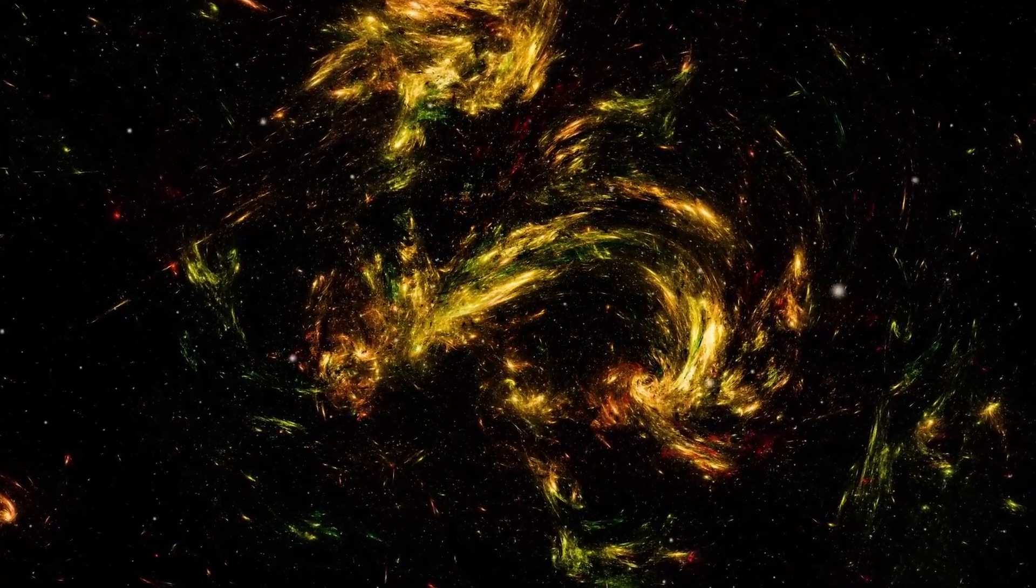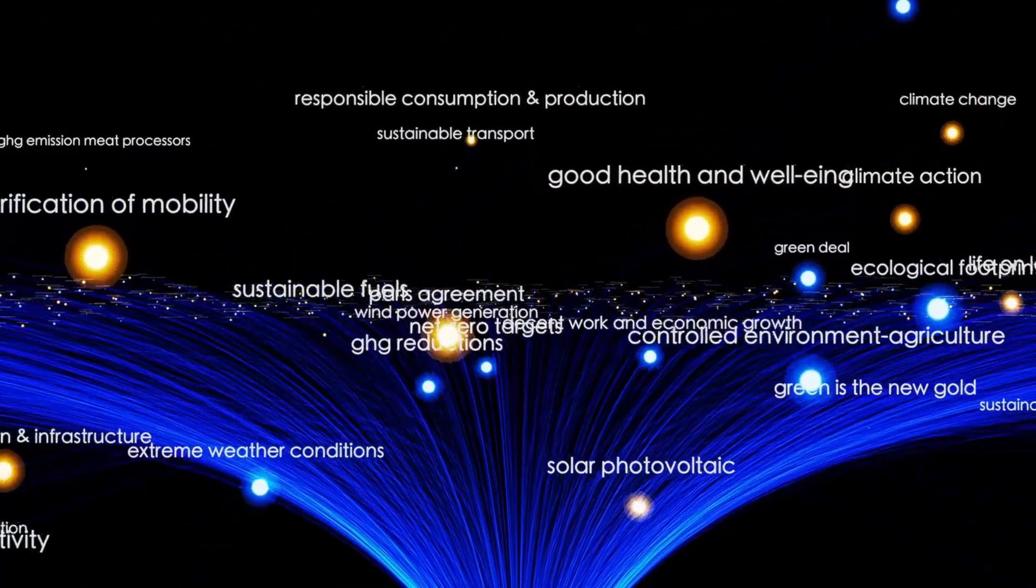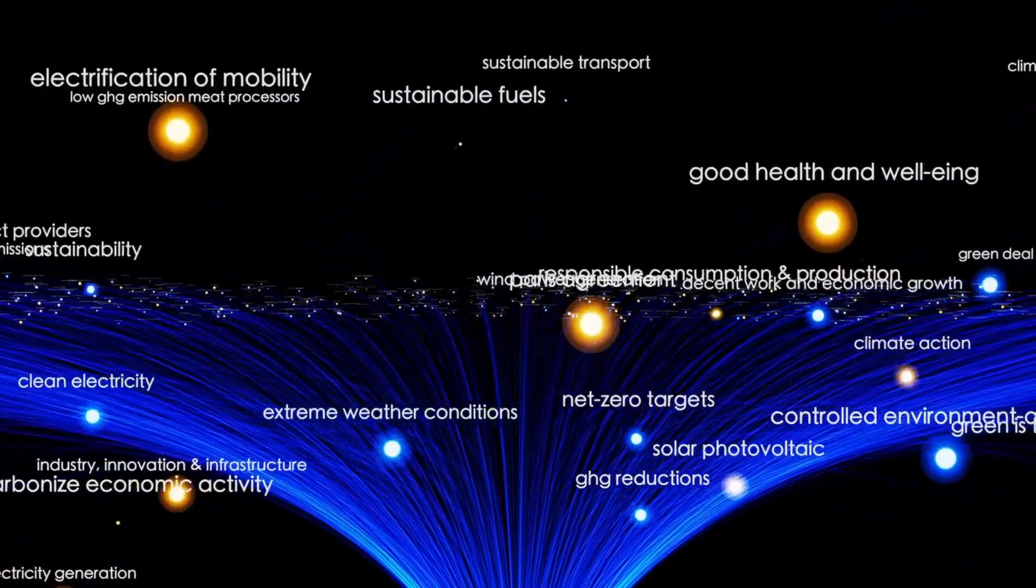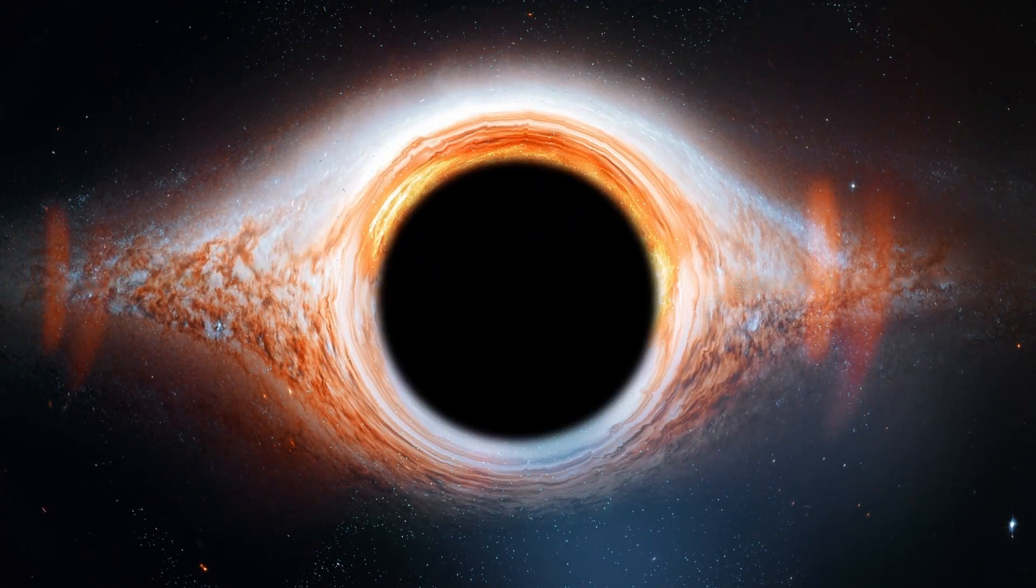This could also help with the Hubble tension. The extra gravitational pull from a neighboring cosmos could be subtly tweaking the expansion rate of our own universe, explaining why our local measurements are faster than predictions from the early universe.